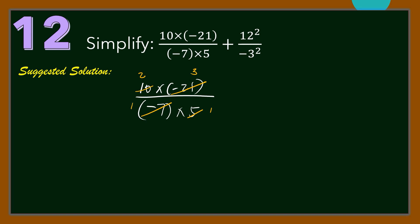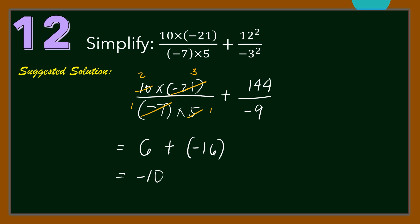For the second part, we have 12 squared, that is 144, and negative of 3 squared, that is negative 9. Hence, we have 2 times 3 is 6, plus 144 over negative 9, that is negative 16. Therefore, our final answer is 6 plus negative 16, that is negative 10.